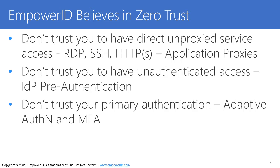Never expose anything if possible without pre-authentication. Your web applications and other things should have a layer of pre-authentication in front of them so that no anonymous access can occur. Also, never rely strictly on primary authentication, which is typically username and password. Always require strong, adaptive, multi-factor authentication before you trust a user's identity.